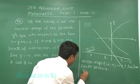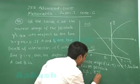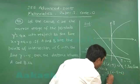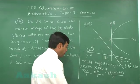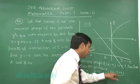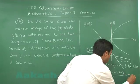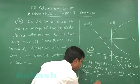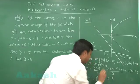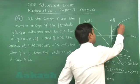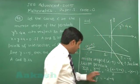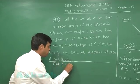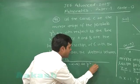Using the mirror image formula, we write (x - α)/1 = (y + 5)/1 = -2(α - 5 + 4)/2. Simplifying, x = -α + 1, so x = 1 - α, and y = -α - 4. Wait — on simplification, the mirror image coordinates come out as x = 1 and y = -α - 4. This point must lie on the parabola y² = 4x.